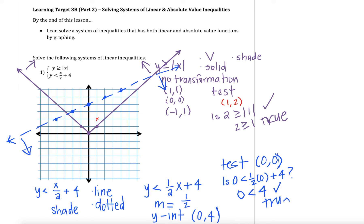I'm going to draw arrows to represent shading below the linear function. Since this is a system, I want my answers to overlap. I need shading where it's inside the V but also below that blue line, which means my final answer is everything inside the V but below the blue dotted line. It's helpful to use arrows to point out where each function shades, then look for where those two regions overlap. For this example, I needed to be inside this purple V but also below the blue dotted line — just this little segment that's on the pizza slice but still below that blue line.